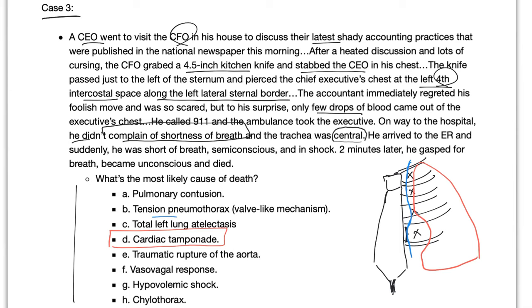So why not tension pneumothorax since it has touched the pleura? Two reasons. First, the trachea was central. And second, he did not complain of shortness of breath. This is not tension pneumothorax. It's cardiac tamponade. Alright, let me tell you the story. He was stabbed by the knife, and the knife was at the left fourth intercostal space.